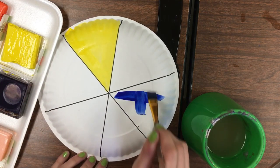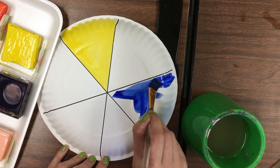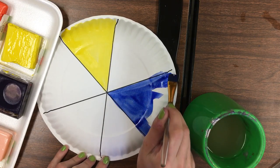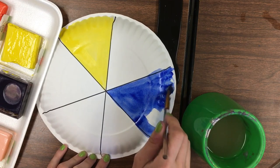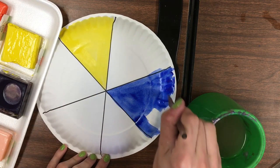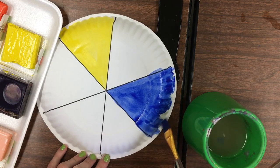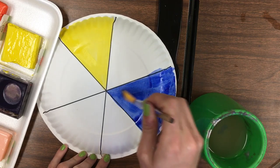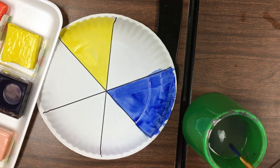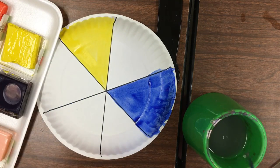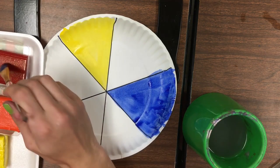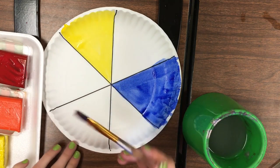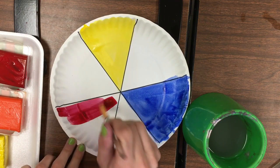My last primary color is going to be red. I'm skipping a spot in between each primary because that is where our secondaries will go, just like the last time we did this. Okay, so I take my red and I'll paint that.